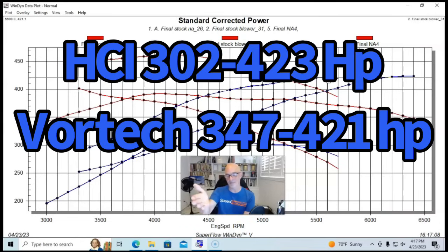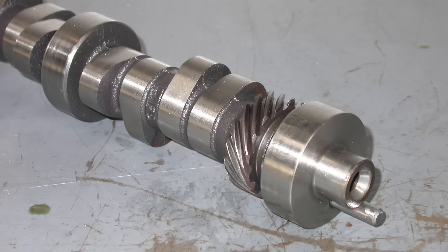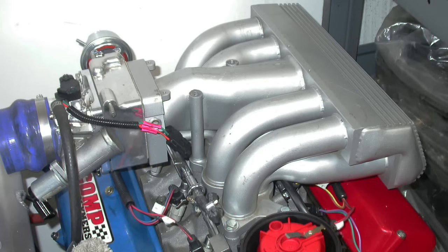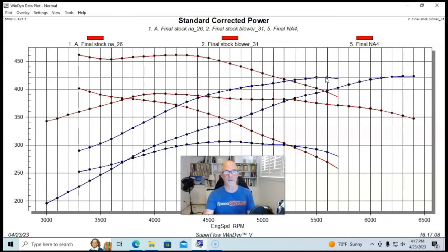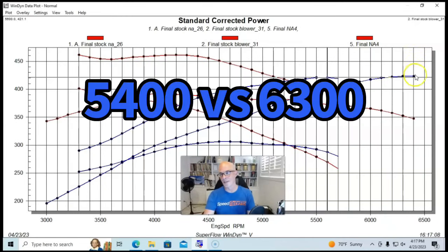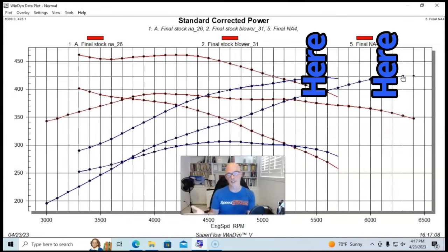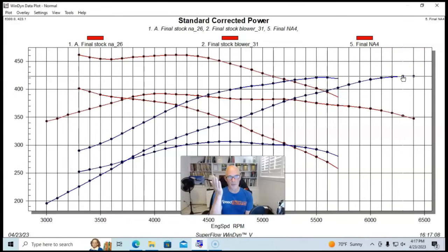You can see it made 421 horsepower, so very, very close to what the heads, cam, and intake 302 made. Now it did it, as we would expect on a 347 choked off with stock heads and a stock camshaft and a GT40 intake manifold, much earlier in the RPM range. It made peak power at 5500 or 5600 RPM, whereas the heads, cam, and intake made it all the way out here at 6300 or 6400.